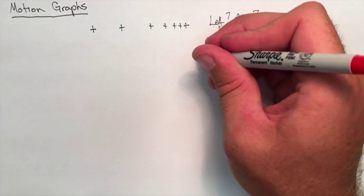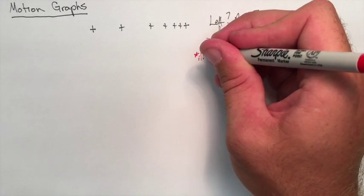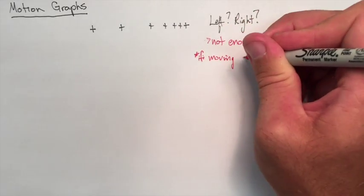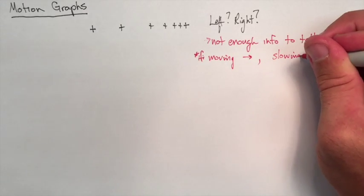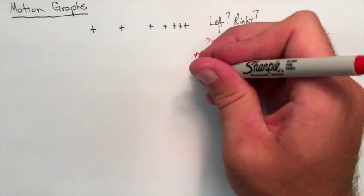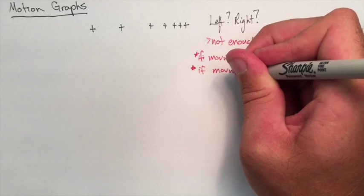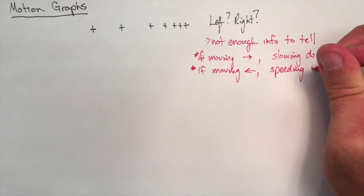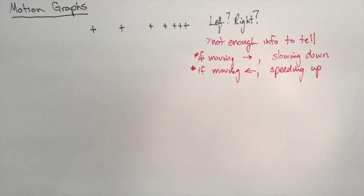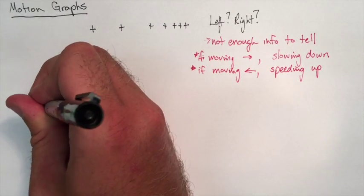If this object is moving to the right, we can say that it's slowing down. If this object is moving to the left, we can say that it's speeding up. It's important to denote what kind of information we're dealing with so we know the motion that we're dealing with.